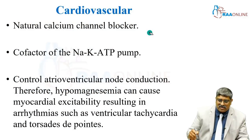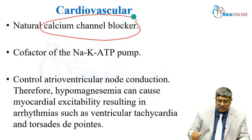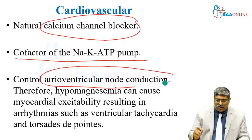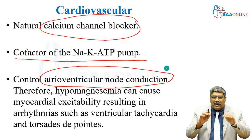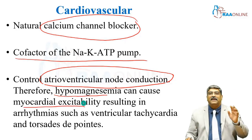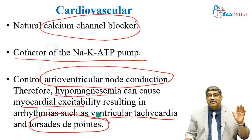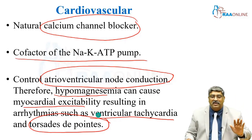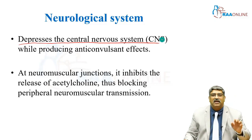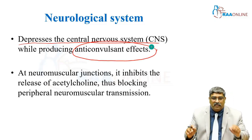Coming to the cardiovascular system — magnesium is a natural calcium channel blocker that counters the effect of calcium. It acts as a cofactor for the sodium-potassium ATPase pump and controls AV node conduction. Therefore, whenever hypomagnesemia is present, it can cause myocardial irritability resulting in dangerous arrhythmias like ventricular tachycardia and torsades de pointes. That is the reason you have to maintain a slightly higher level of magnesium whenever there is arrhythmia. In the neurological system, it depresses the central nervous system, thereby producing an anticonvulsant effect, so it is used in the treatment of seizures.